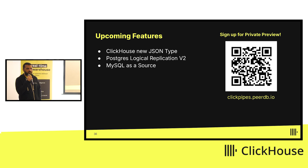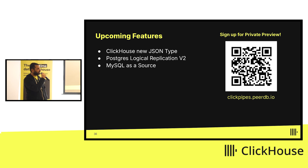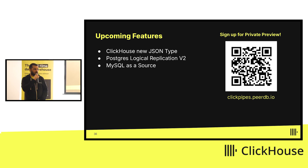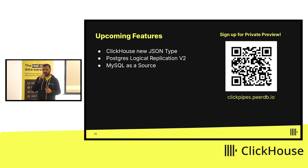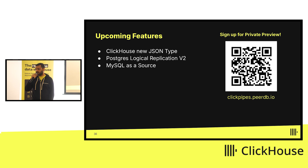We are already working on new features. As ClickHouse introduced a new JSON type, we are starting to support replicating native JSONB from Postgres to the JSON type in ClickHouse via ClickPipes and PeerDB. We're also working on Postgres logical replication protocol v2, which reads uncommitted transactions on the fly so we can apply incoming changes as fast and efficiently as possible. Finally, we are planning to add MySQL as a source — if you use MySQL and would like to start replicating data, reach out and we'd love to design-partner with you.